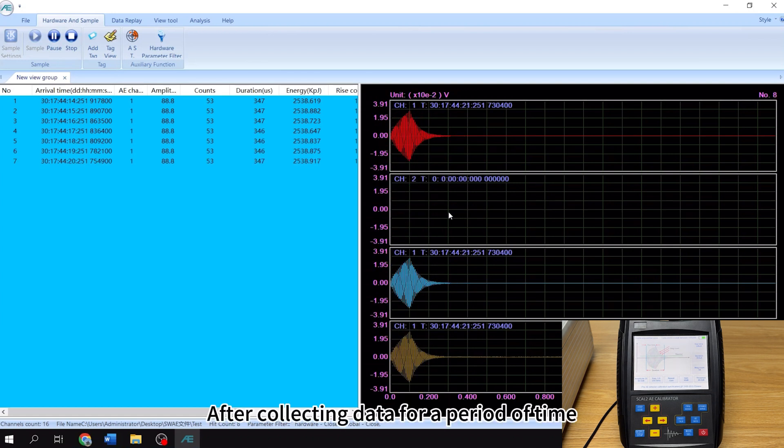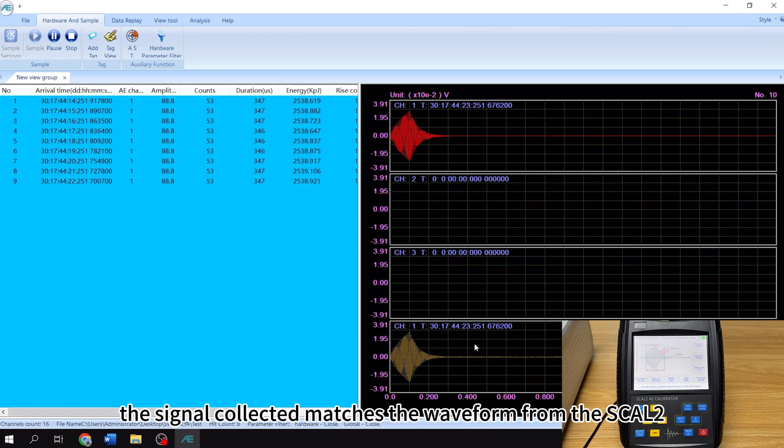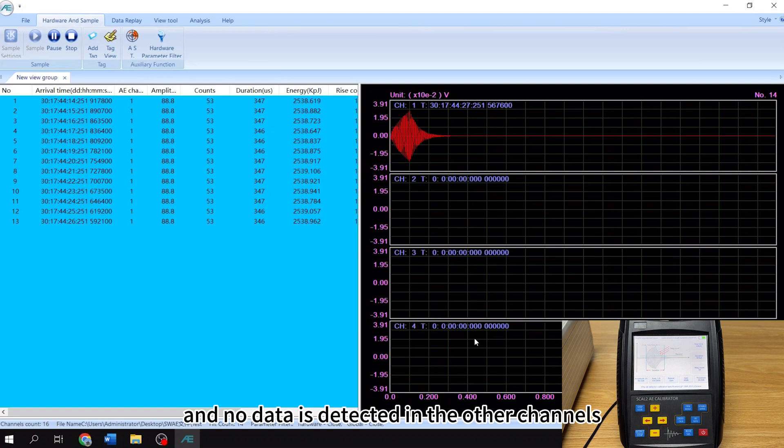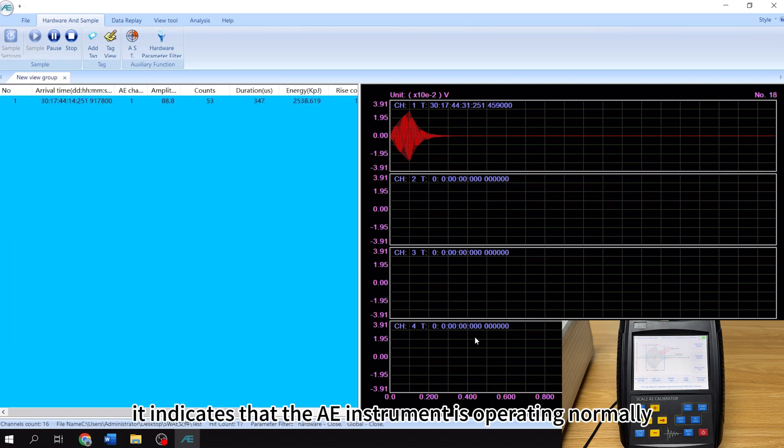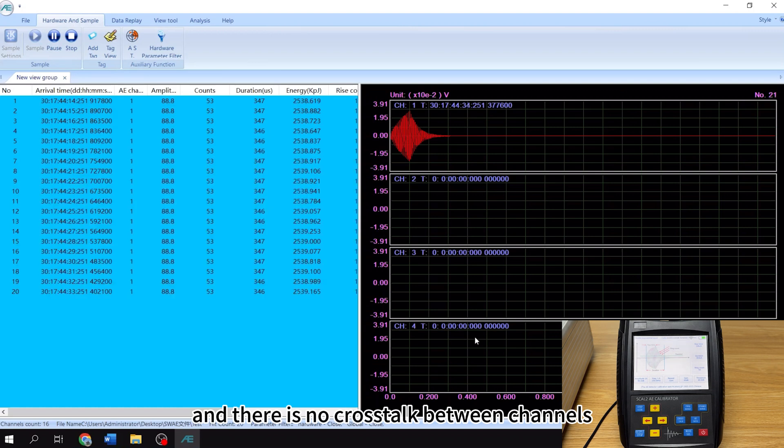After collecting data for a period of time, the signal collected matches the waveform from the SCAL-2 and no data is detected in the other channels, it indicates that the AE instrument is operating normally and there is no crosstalk between channels.